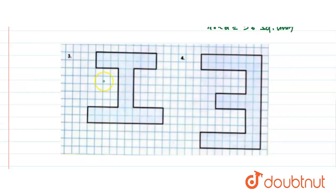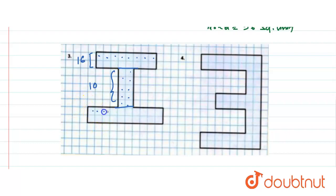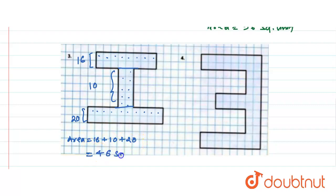Now let us count the third figure — it is simple. We count 8 squares across in 2 rows, giving 16 squares. From the next section we count 10 squares. Then another section of 10 squares in 2 rows gives 20. So the area equals 16 plus 10 plus 20, which is 46 square units. That is the area of this figure.